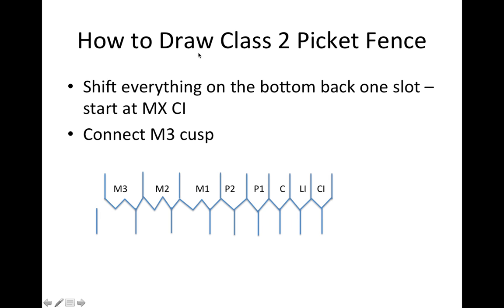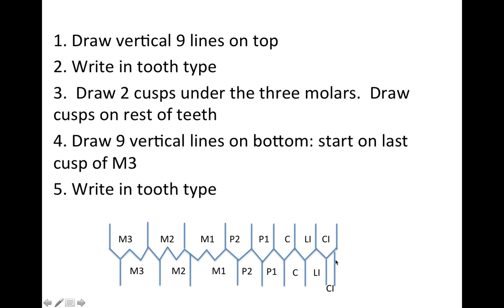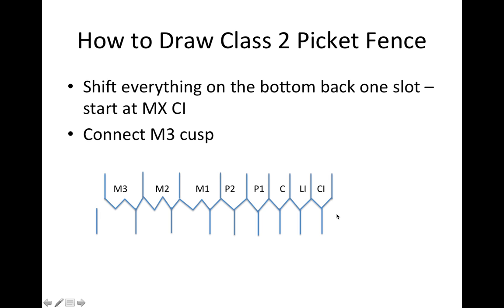We draw the rest of the lines and fill in the tooth type: third molar, second molar, and first molar — remembering that line is set off to the distal, showing the distal cusp. For class two Angle occlusion, all you have to do is shift everything on the bottom back one slot. That gives you an easy template for class two occlusion, and I go through a typical class two question at the end of the lecture.